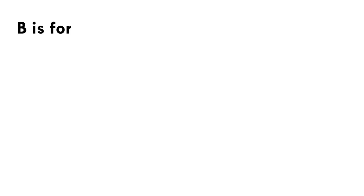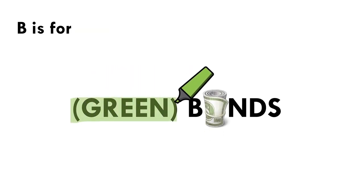B is for green bonds. These are financial instruments used to fund projects with environmental benefits. They enable investors to support initiatives like renewable energy, clean transportation, or sustainable infrastructure. By issuing green bonds, companies can attract capital specifically earmarked for environmentally friendly projects, contributing to the transition to a more sustainable economy. If your construction project isn't considered sustainable, it won't have access to these funding streams.